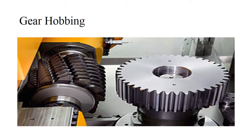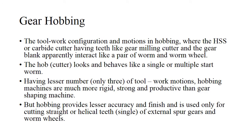Next, talking about gear hobbing. Here you can see a picture of a gear and on the left is the hobbing cutter. The gear hobbing process is also used for producing gear teeth. The tool involves an HSS cutter which has teeth like a gear milling cutter, and the gear blank and cutter interact like a pair of worm and worm wheel. The cutter behaves like a single or multiple start worm, and this involves fewer tool-work motions. Hobbing machines are much more rigid, strong, and productive than gear shaping machines, but hobbing produces less accuracy and finish. It is basically used for cutting straight or helical teeth of external spur gears and worm wheels.